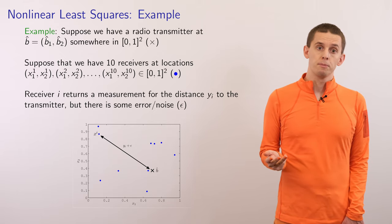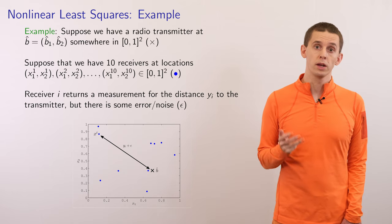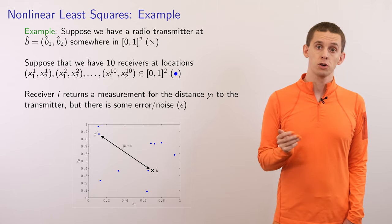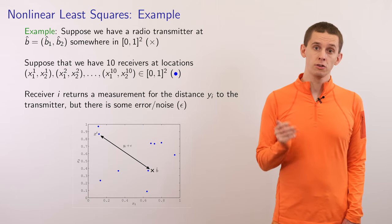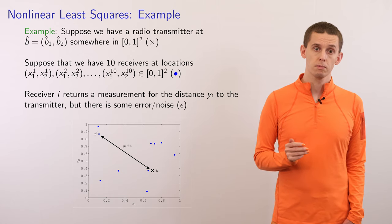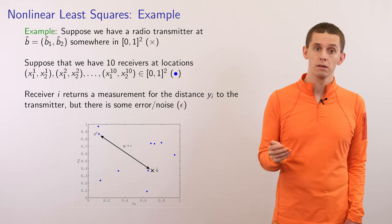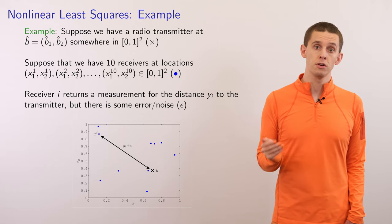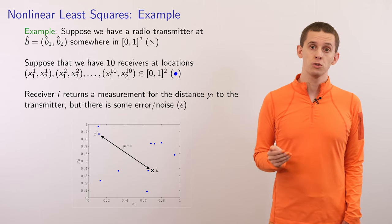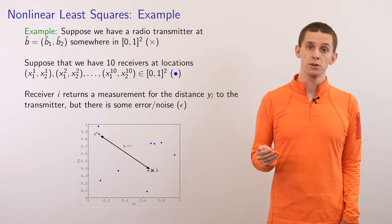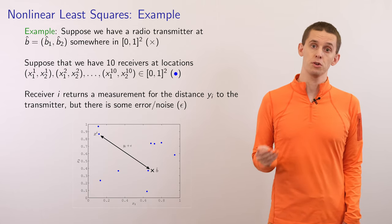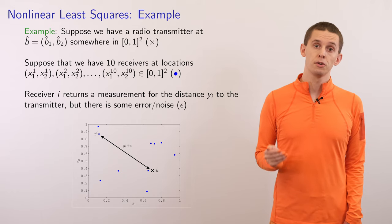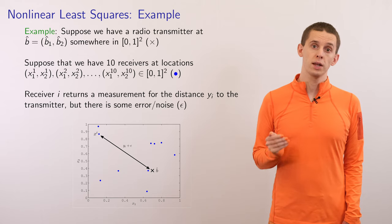Let's look at a specific example. Suppose that we have a radio transmitter in the unit square where the coordinates x and y go from 0 to 1. Let the radio transmitter's true position be given by b-hat with components b-hat 1 and b-hat 2, where the subscripts denote the x and y coordinates. Now suppose that we have 10 receivers located at positions x1, x2 up to x10, where we use superscripts to denote the different receivers. Receiver i gets a measurement of the distance from itself to the transmitter, which we'll call y_i.